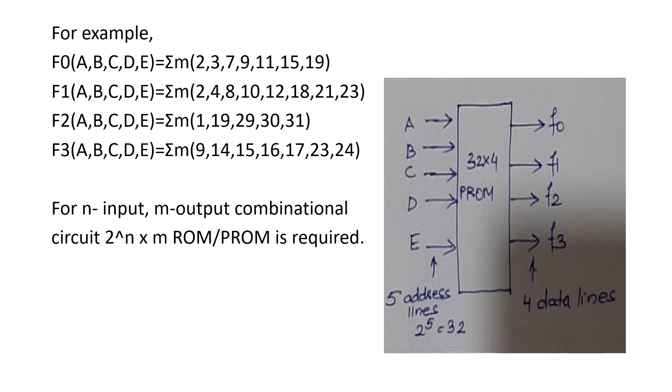So, I am going to need a PROM where there are five input lines. Five input lines means 2 raised to 5, 32 address locations and four data lines. So, the PROM which is needed is 2 raised to 5 equal to 32 by 4 PROM. From this, we can have a generalized equation that when you want to implement a function with N inputs and M outputs, then the PROM or ROM which we need will have a size 2 raised to N into M.